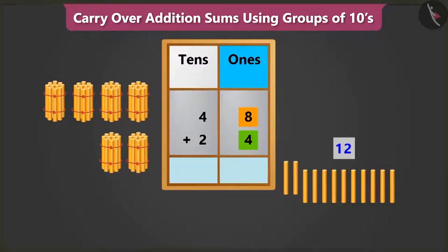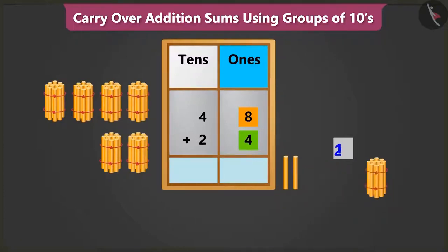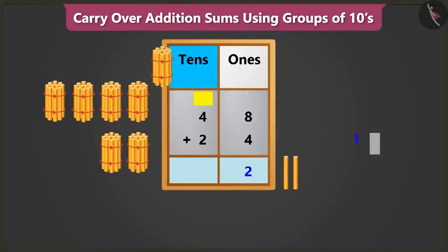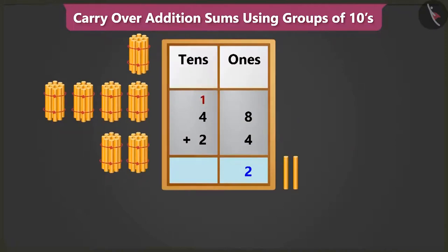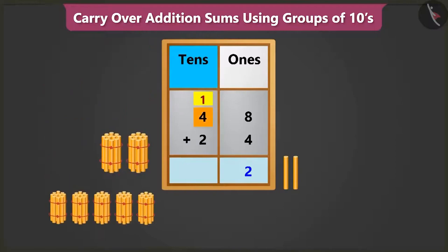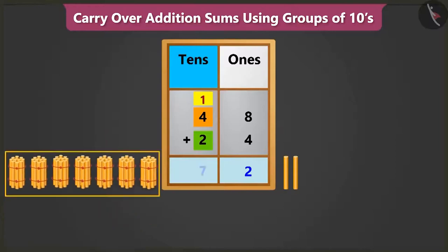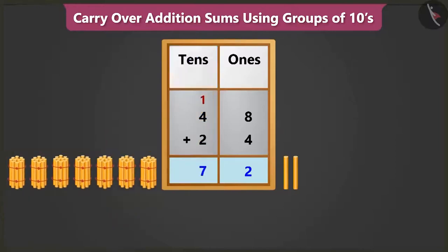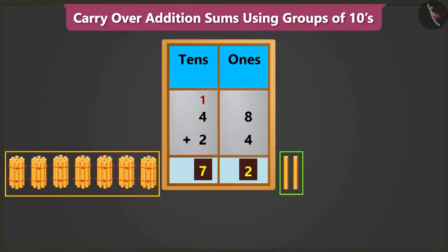So, from 12 ones, we will write 2 in the ones box and carry over 1 ten in the tens box. Now, when we add 1 and 4, we get 5, and adding 5 and 2, we get 7. Now, 7 tens added to 2 ones makes 72. So, we have to pay 72 rupees.